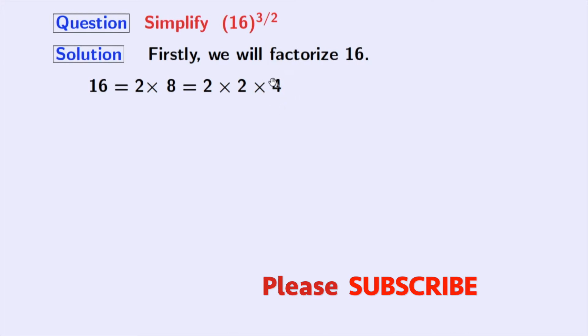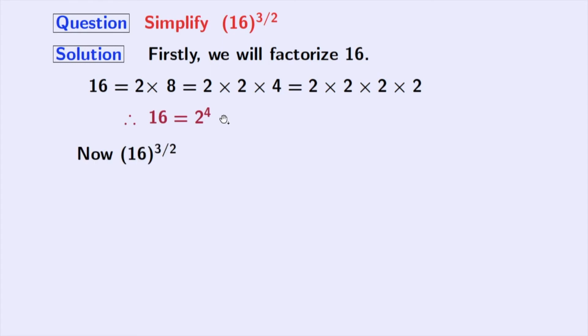And we know that 4 is 2 times 2. Look that all these numbers are prime numbers, so we will stop factorizing. As this is the product of four 2's, we can write 16 as 2 power 4. Now our given quantity is 16 whole power 3 by 2.